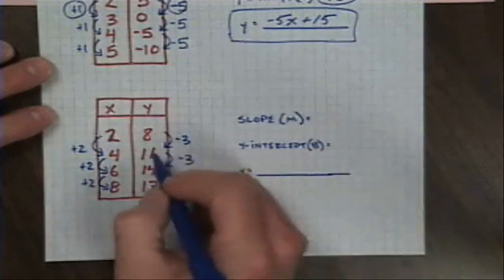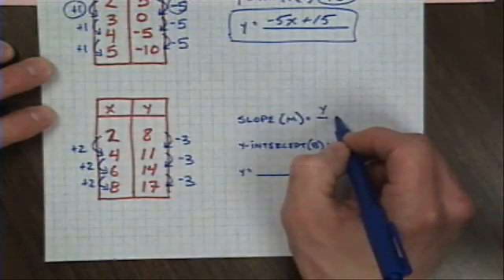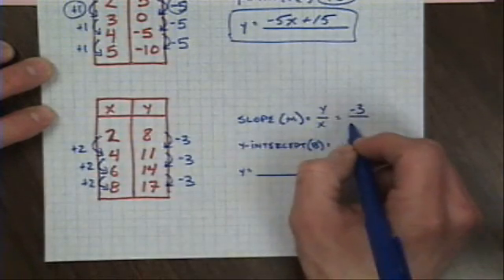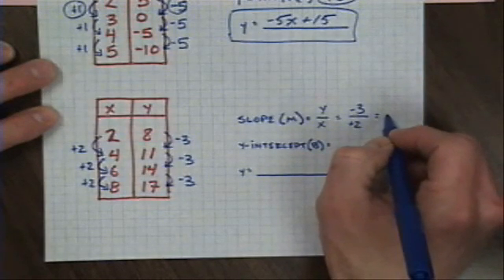If I calculate my slope, same technique. I'm going to put my negative 3 or my y value on top. My x value of plus 2 goes on the bottom. And this is pretty simplified. I'm simply going to write it negative 3 halves.